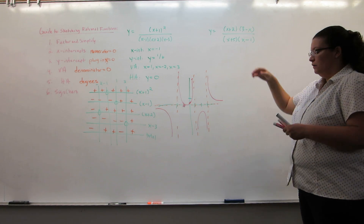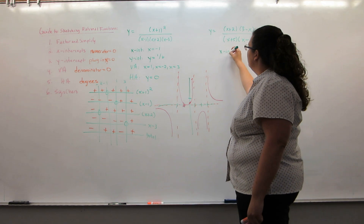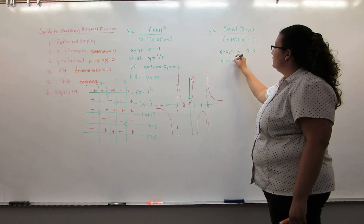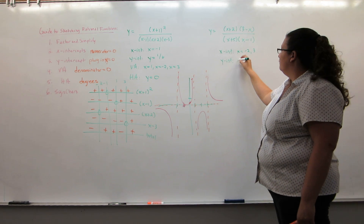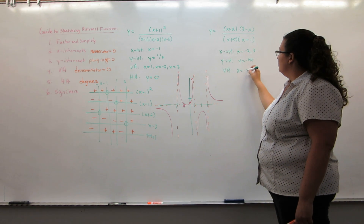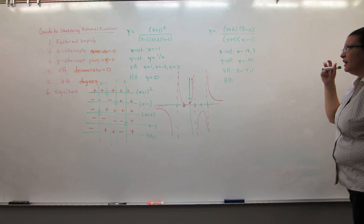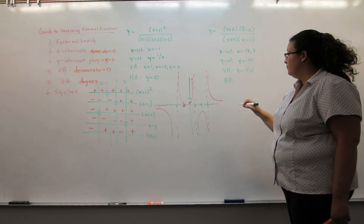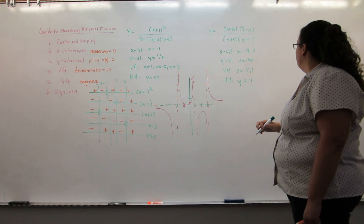We're going to do one more example. First step is to make sure it's factored and simplified. X-intercepts are where the numerator is 0, so negative 2 and positive 3. Y-intercept: plugging in x equals 0, I get 6 on top and negative 5 on bottom, so negative 6 fifths. Vertical asymptotes are where the bottom is 0, so x equals negative 5 and positive 1. For horizontal asymptotes, if I were to multiply this out, I'd get negative x squared on top and positive x squared on bottom. Since it's the same degree on top and bottom, I cancel those x squareds and I'm left with y equals negative 1. And now I'm going to do my sign chart.